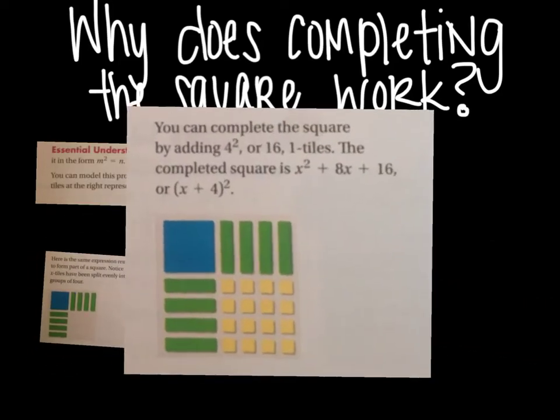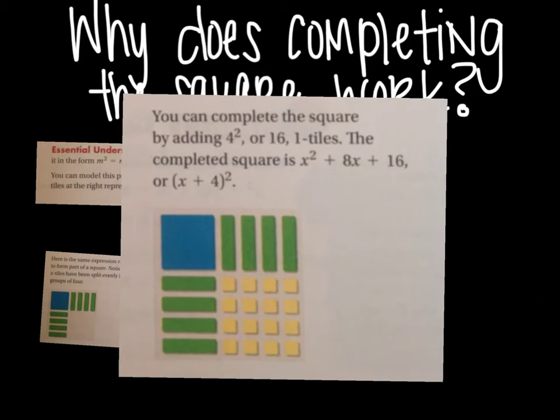And you can add tiles, like you can see here, of pieces, which is four squared. Because you have four times four, that gives you 16, which means you need 16 of the little ones tiles. And so, the completed square, then, for our problem would be x squared plus 8x plus 16. And then if you factor that, you would come up with x plus 4 in parentheses squared, that binomial.